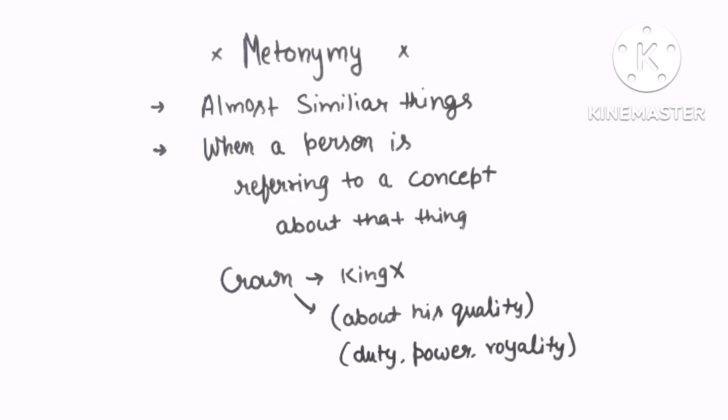On the other hand, in metonymy, when we use a word, it refers to a concept associated with another thing. For example, 'crown' refers to the qualities of a king — his duty, his power, his royalty.